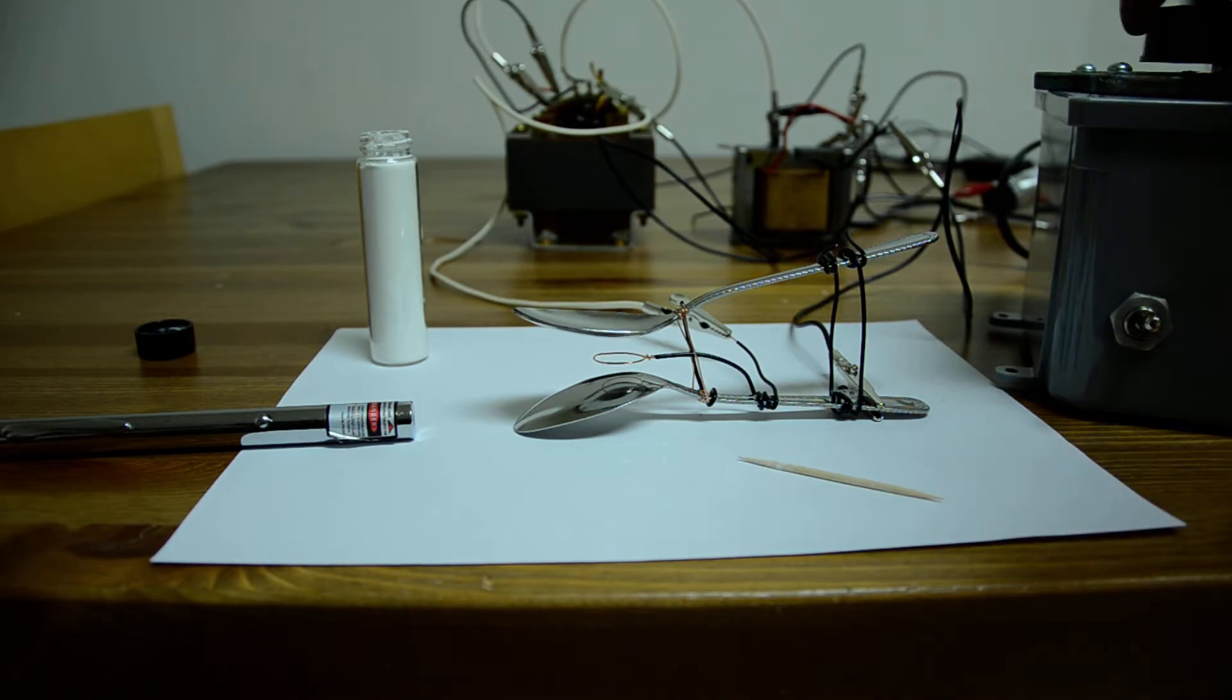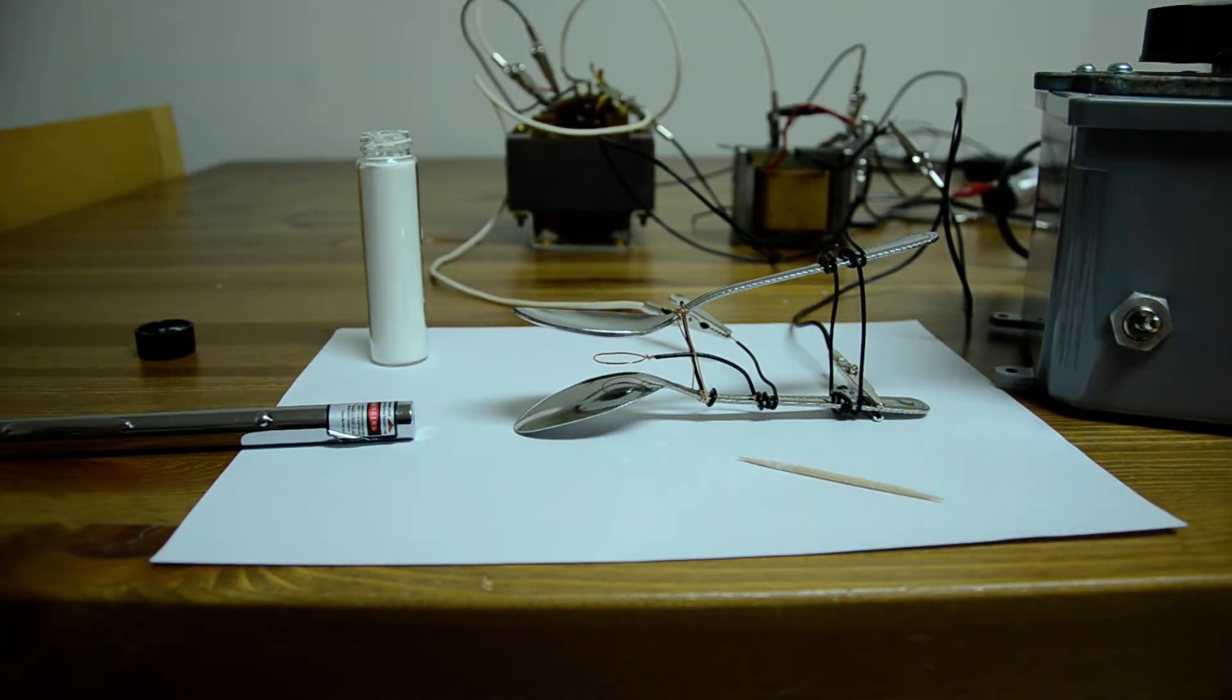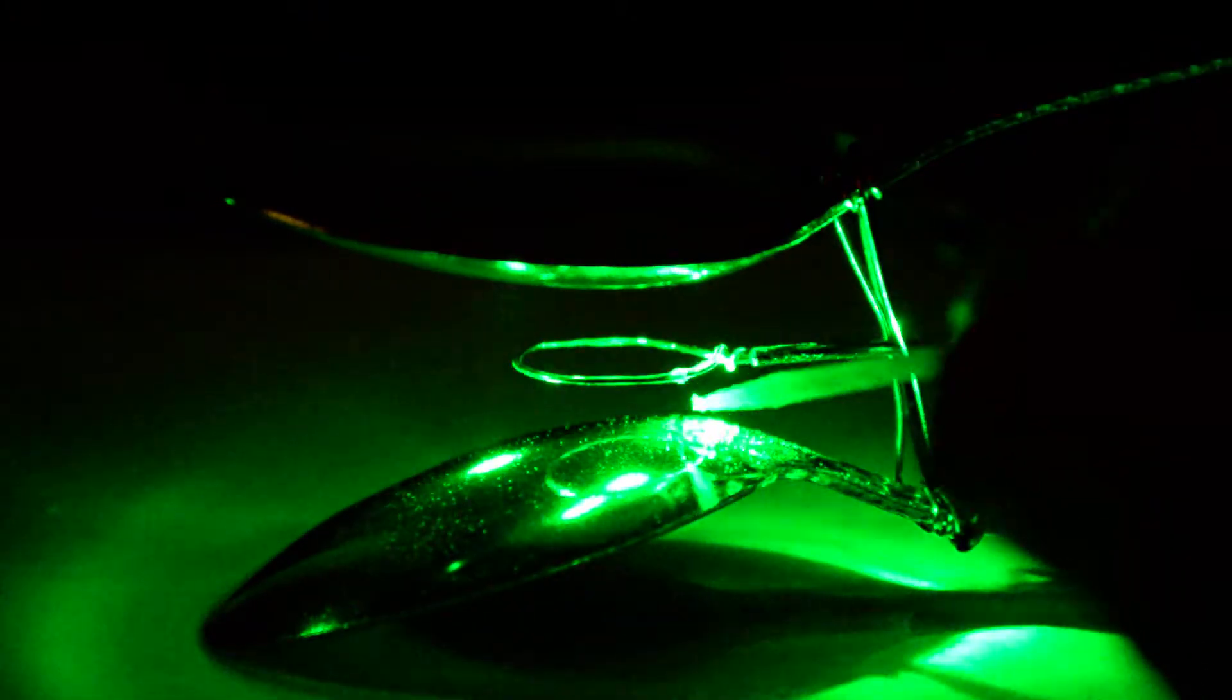So let's turn it on and crank it up. I'll get some cornstarch on the end of a toothpick. Let's see if we can trap some in there.